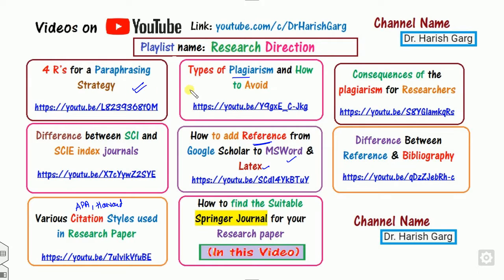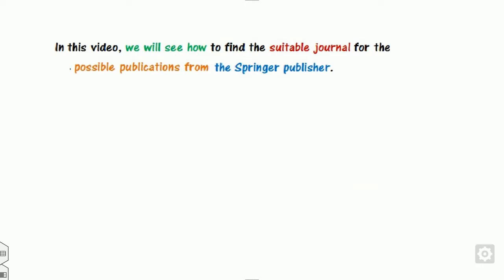Make sure that once you have seen this, you are able to write your good papers in them. You can find all of those in my channel, Dr. Harishkar, under the playlist research direction. Now we will find the suitable journal. What is the meaning of suitable? It is depending upon the person, what is suitable for them.